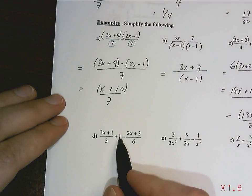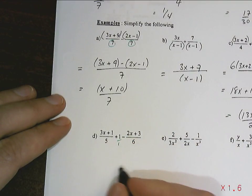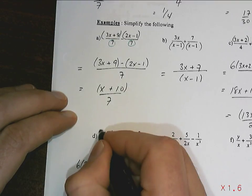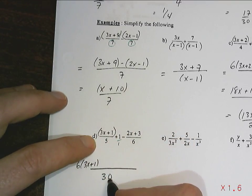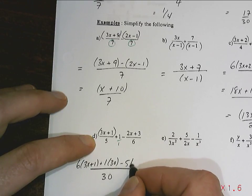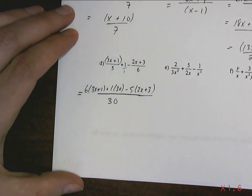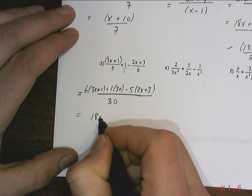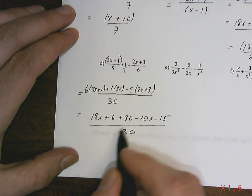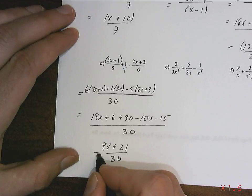Looking at this next one — notice that the whole number is the same as 1 over 1. So when we look at the common denominator of 5, 1, and 6, the LCD is 30. I multiply 5 by 6, so I multiply its numerator by 6. I multiply 1 by 30, so the numerator 1 gets multiplied by 30. And I multiply 6 by 5 to get 30, so I multiply that top by 5. Expanding: 18x plus 6 plus 30 minus 10x minus 15 over 30, which gives us 8x plus 21 over 30. That's the answer.